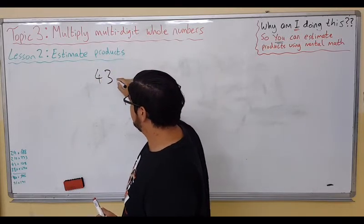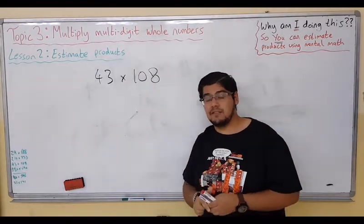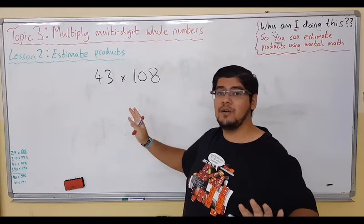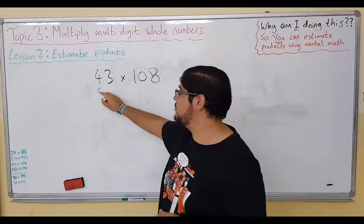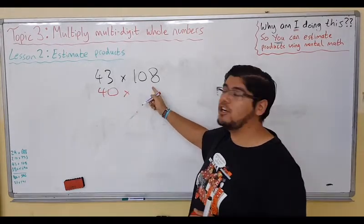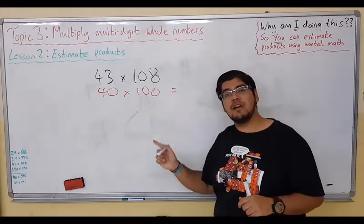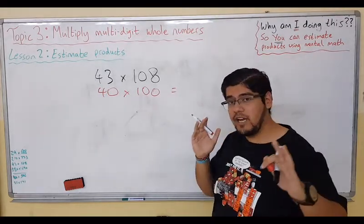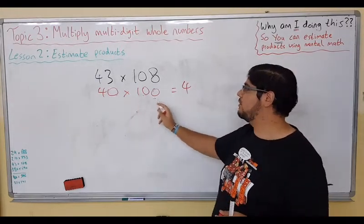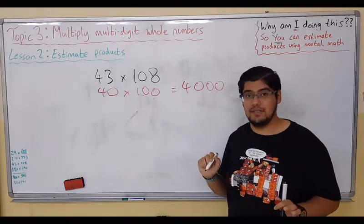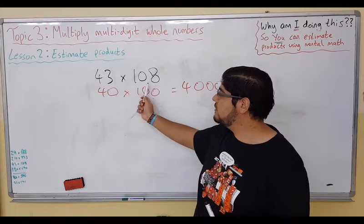Let's do our next one: 43 times 108. You should be looking at this now and saying 43 is close to 40, so that's what we're going to use. 108 is close to 100. 40 times 100—mental math, right? 4 times 1 is 4. How many zeros? One, two, three. Over estimate or under estimate? Both numbers were rounded down, so that means this is an under estimate.